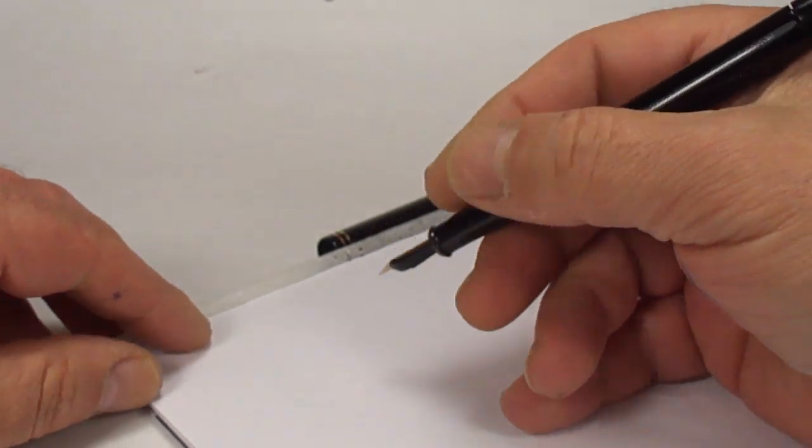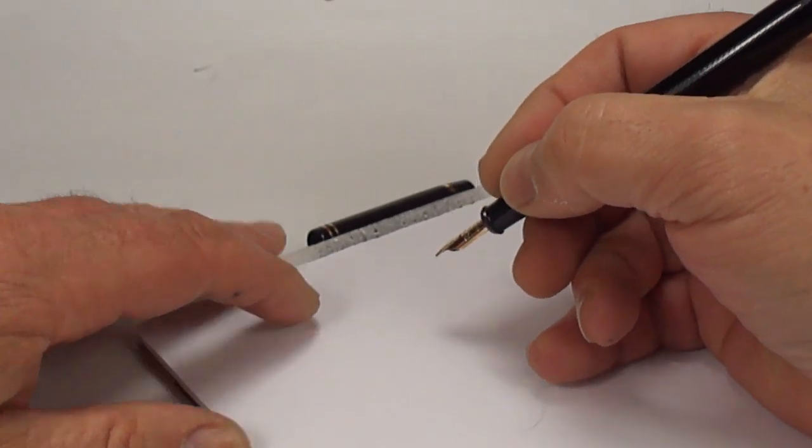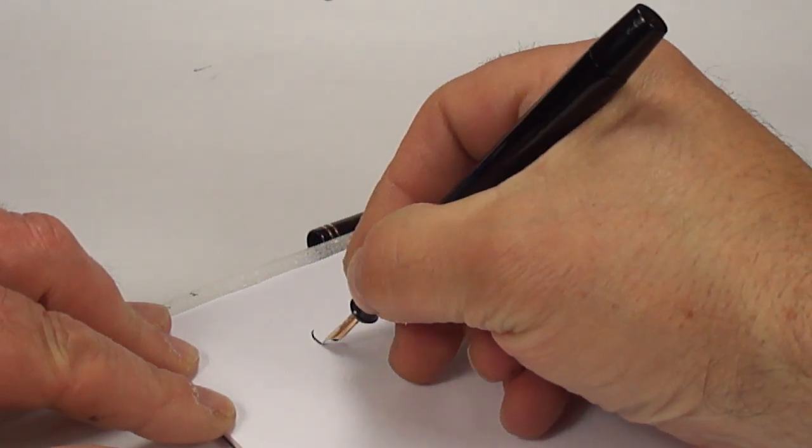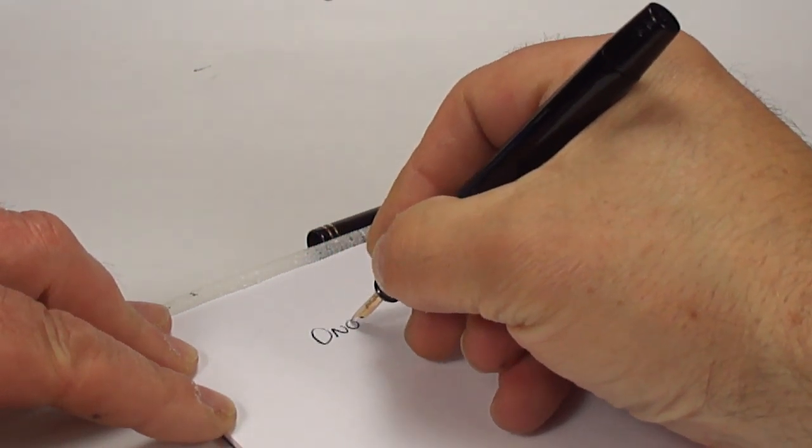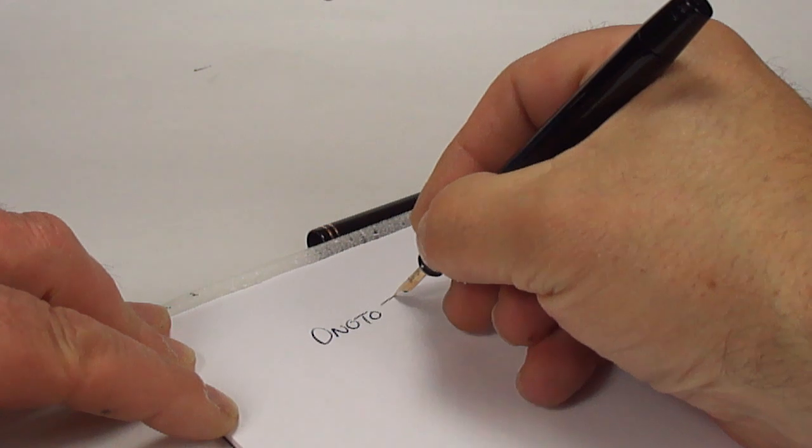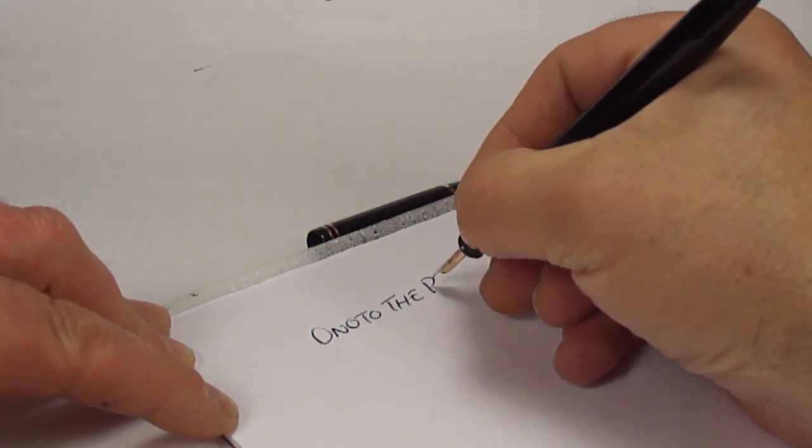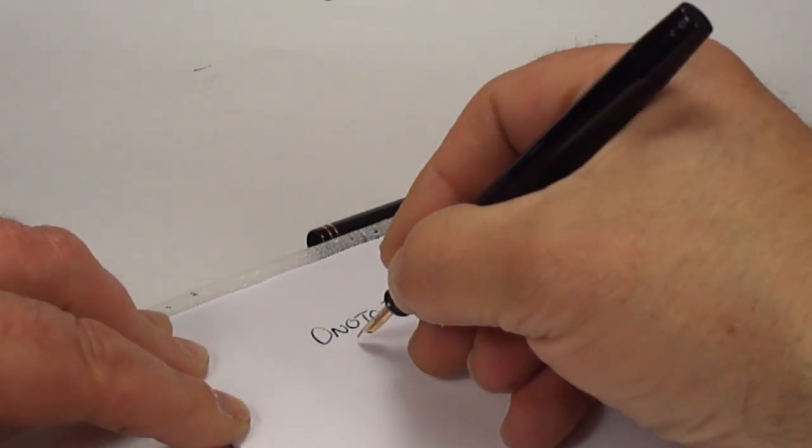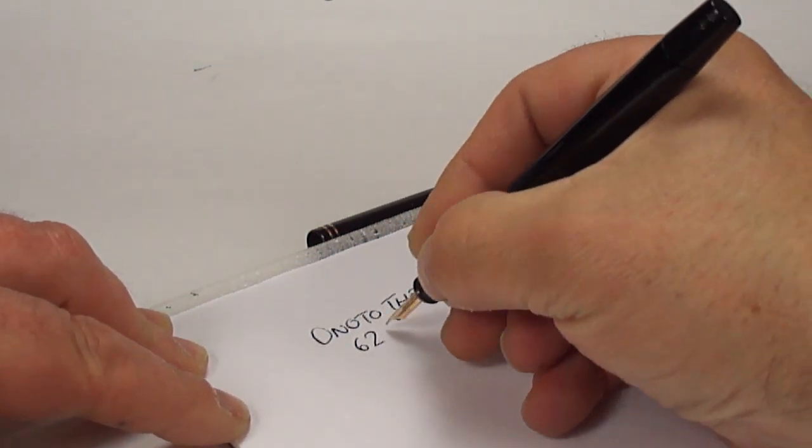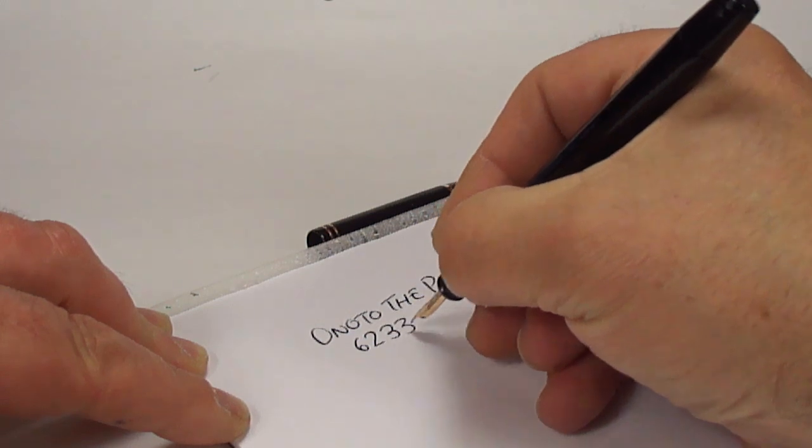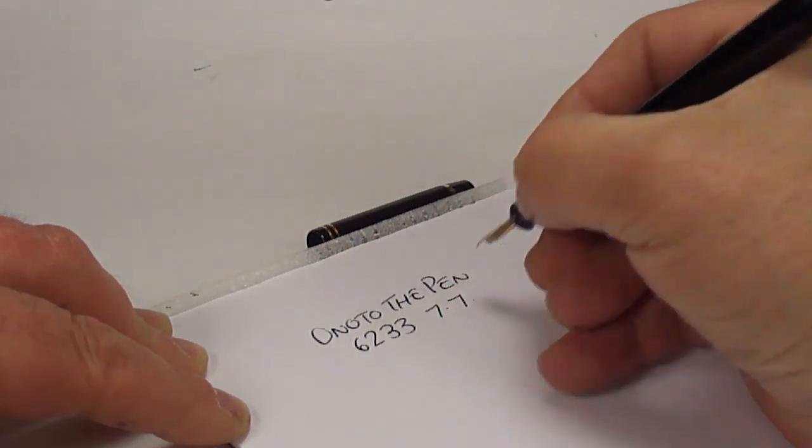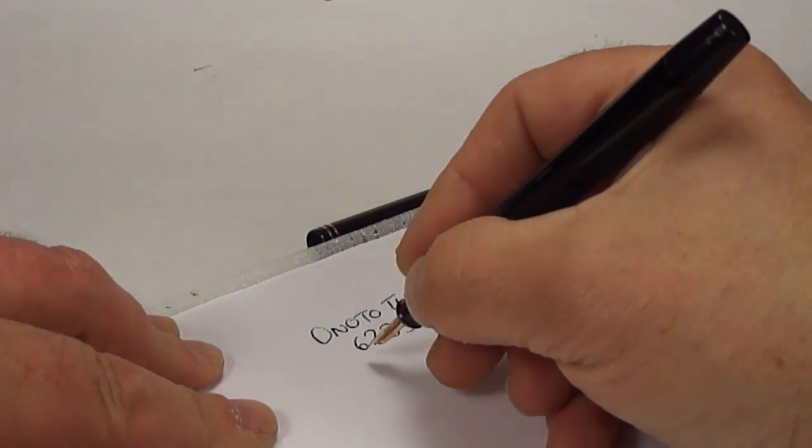So, what we've got here, as I said, is the Onoto. This is the Onoto, the pen. And, as we said, the model number for this particular one is the 6233 and then to the back it's got 7.7.